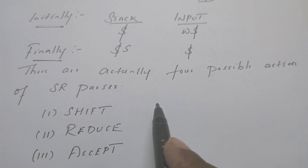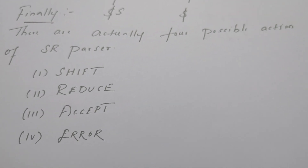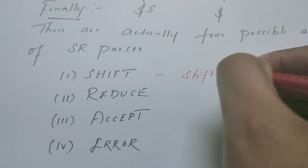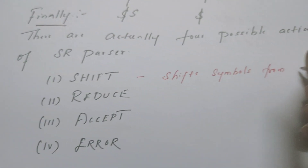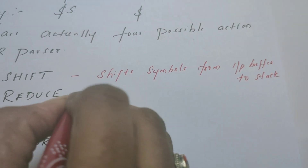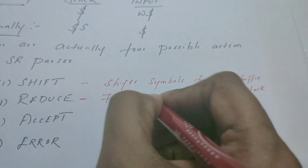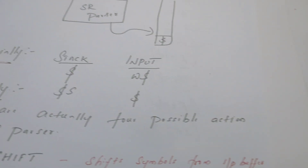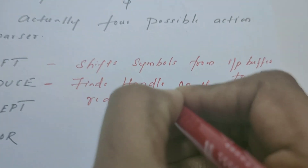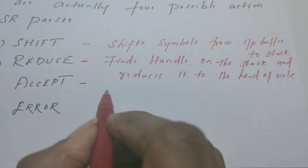The shift-reduce parser performs four actions: shift, reduce, accept, and error. Shift means moving input symbols from the input buffer onto the stack. Reduce means the parser finds a perfect handle on the stack and reduces it to the head of the production rule.